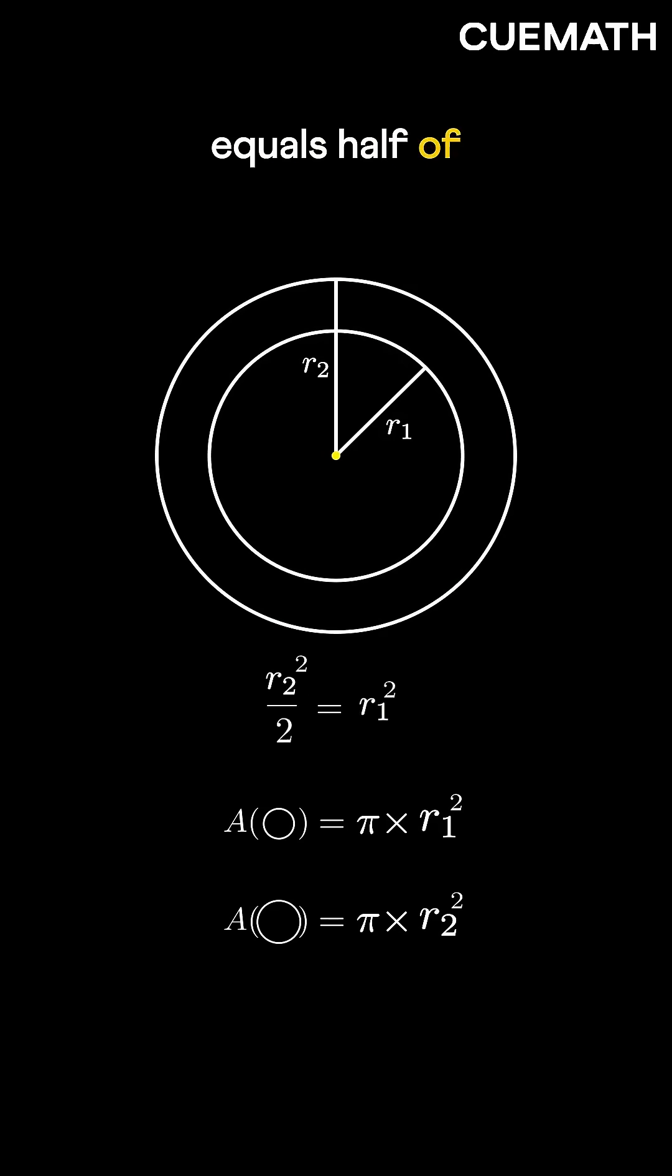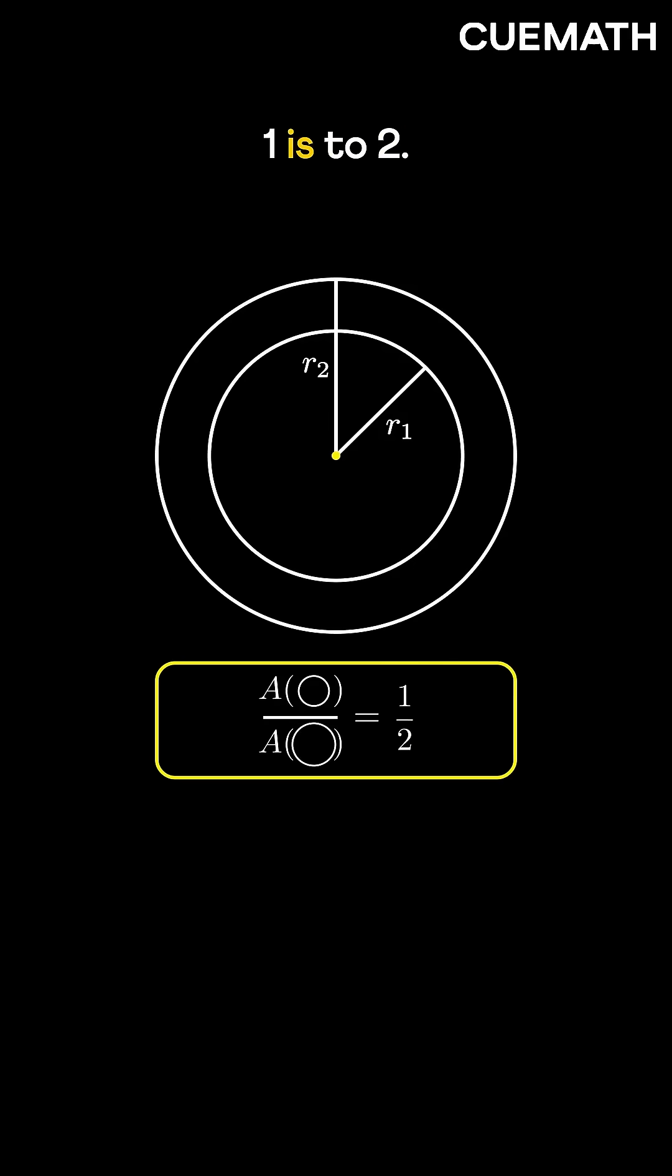Since r1 squared equals half of r2 squared, the area of the smaller circle becomes pi times r2 squared by 2, half the area of the larger circle. Hence the ratio of the area of the smaller circle to the larger circle is 1 is to 2.